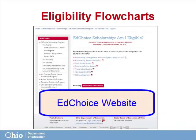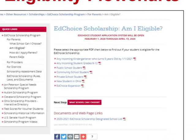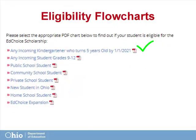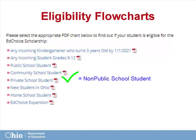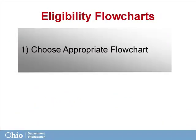Once we have identified our student situation, we must find the appropriate situational flowchart and answer the questions correctly to arrive at the possible outcomes. We have six potential student eligibility situations: any incoming kindergartner who turns 5 by January 1st; any incoming student grades 9 through 12; public school student; community school student; private school or non-public school student; new student in Ohio; homeschooled students; and EdChoice Expansion students who are not eligible for traditional EdChoice scholarships.